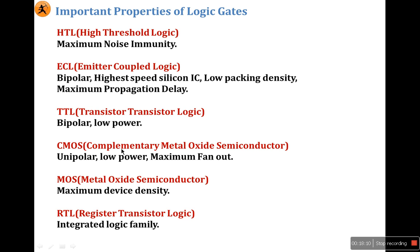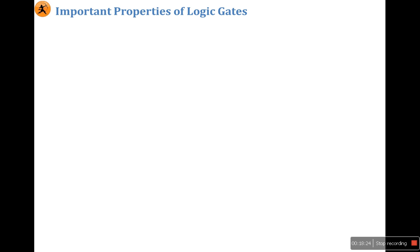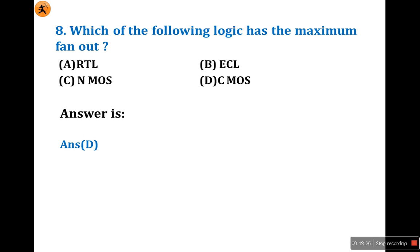Summary: ECL is the fastest logic family. TTL is the widely used bipolar logic family. CMOS has maximum fanout and lowest power consumption and is unipolar. For this question — which logic family has maximum fanout — the answer is D: CMOS.